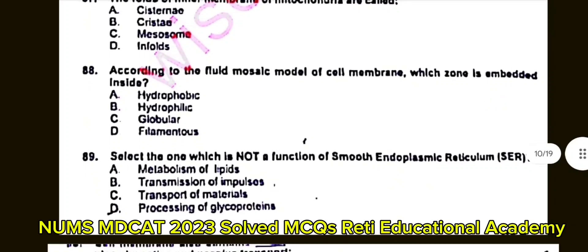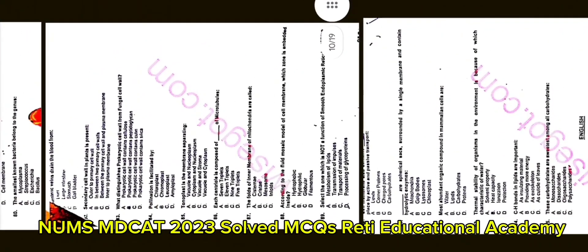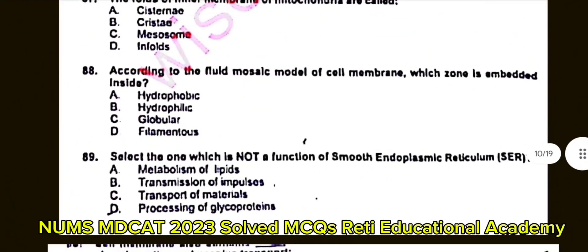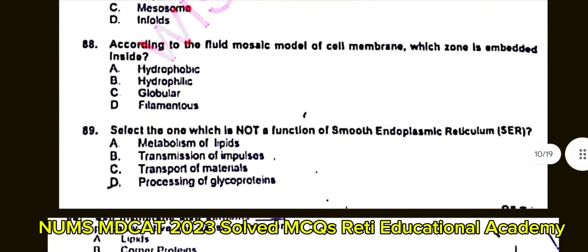Question number 89: Select one which is not a function of SER (Smooth Endoplasmic Reticulum). A. Metabolism of lipids. B. Transmission of impulse. C. Transport of materials. D. Processing of glycoprotein. The correct answer is D: Processing of glycoprotein.